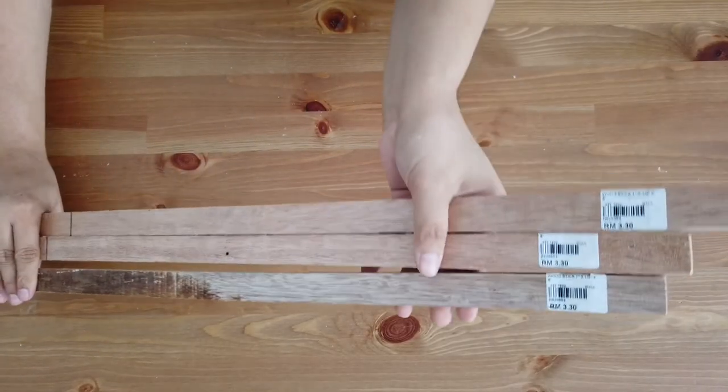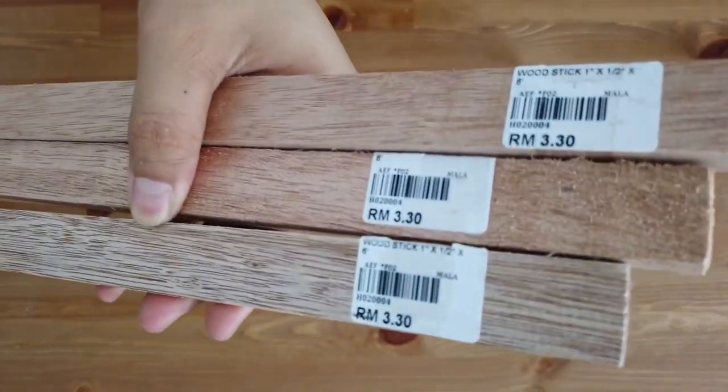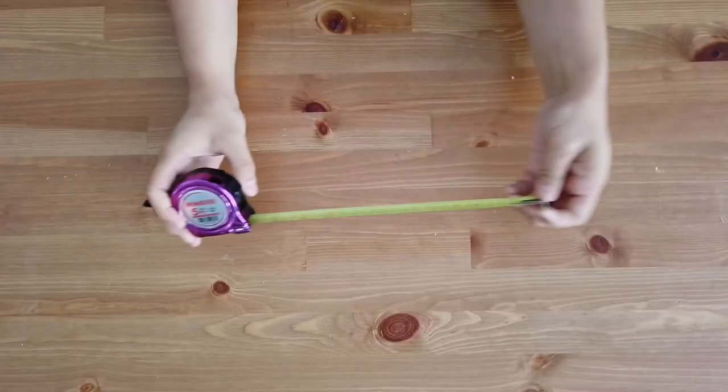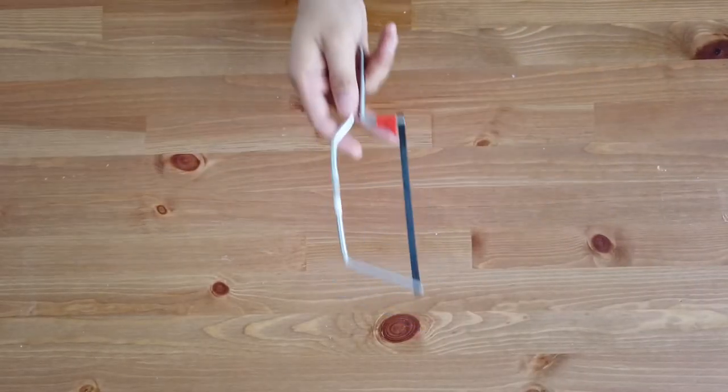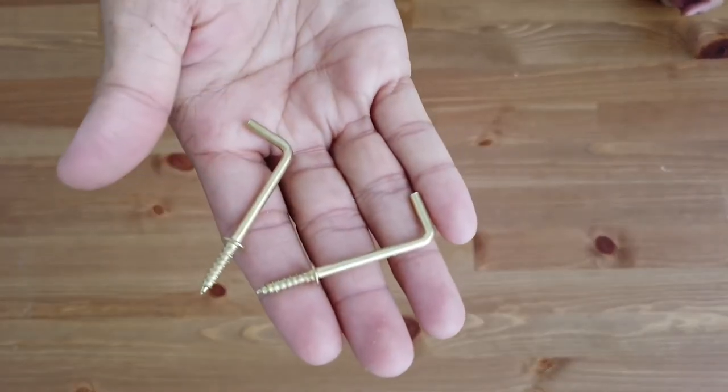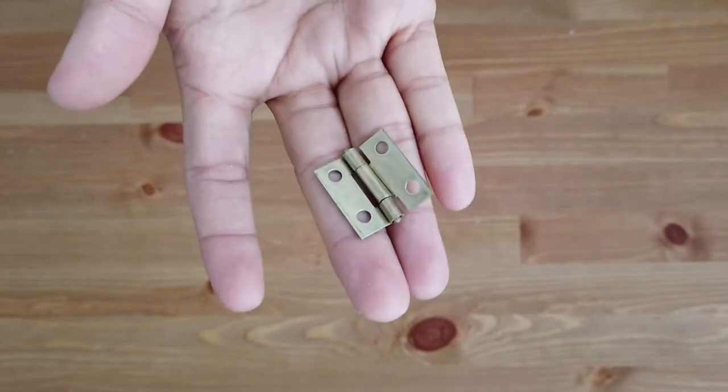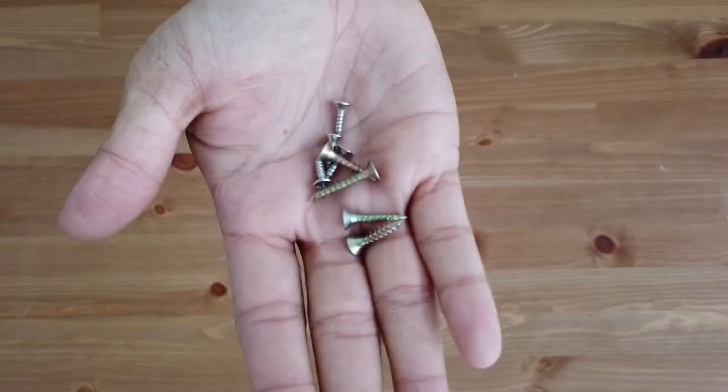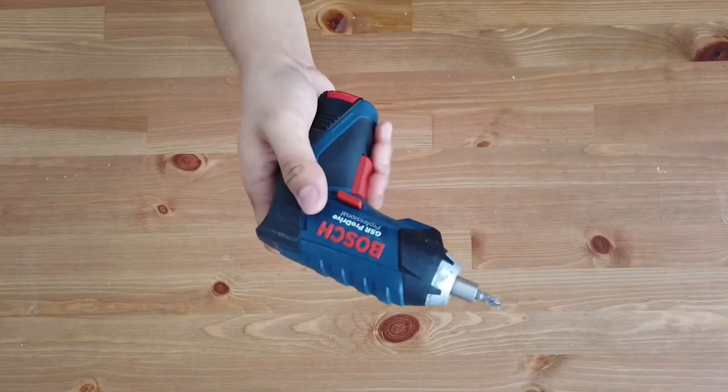So first up, you will be needing three of these wooden sticks. Again, as I mentioned, this is only three ringgit each. A measuring tape, this mini saw, a little bit of yarn, and this L-shaped screw-on hook, one hinge—this is the smallest one—some screws, and a screwdriver. And that's it.